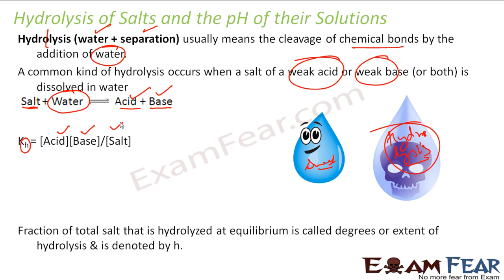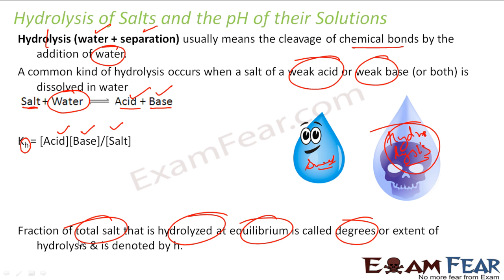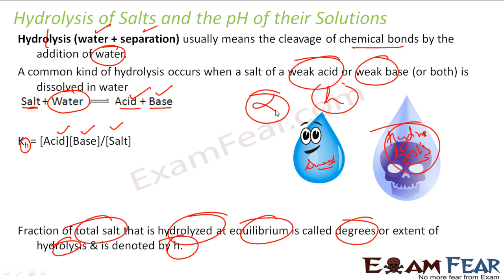Just as in equilibrium we had the degree of dissociation alpha, here also we have the fraction of total salt that is hydrolyzed at equilibrium — called the degree of hydrolysis, denoted by h. Both are the same concept, but h is specifically for hydrolysis, representing the extent to which the salt is hydrolyzed at equilibrium.